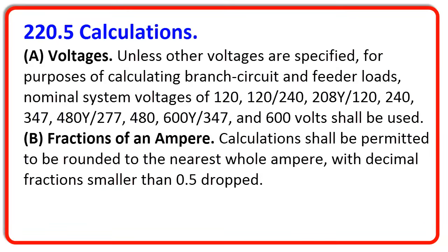We are now out of Article 210 and have moved into Article 220. Let's start in 220.5. This gives us our nominal voltages that we have to use for calculations. The word nominal means in name only. Our nominal voltage for a dwelling unit is 120/240. Now that doesn't mean that we might not have 112 volts, or maybe 220 or 228 somewhere in there. We don't really know exactly what we're going to have at each and every dwelling unit, so we have to have some sort of benchmark to base our calculations on.